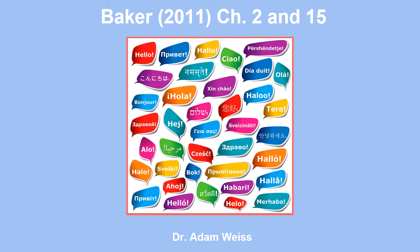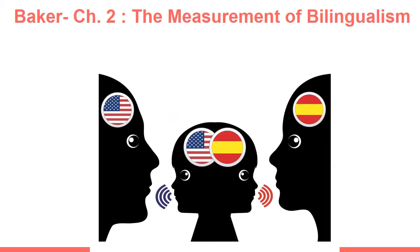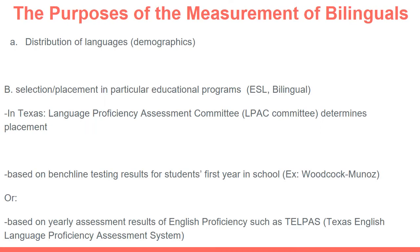Welcome back to Language Development. This week we'll be discussing Baker Chapter 2 and Chapter 15. So let's go straight into our discussion. In Chapter 2 of Baker, the focus of that chapter is on how bilinguals are measured and assessed. We'll discuss that today in our lecture.